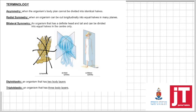Radial symmetry means you can cut this organism only lengthwise in many planes and you will get equal halves. And bilateral symmetry is an organism that has a definite head and a tail, and you can only cut this organism in the center and then you will have equal halves. So those are the definitions for the different types of symmetry.